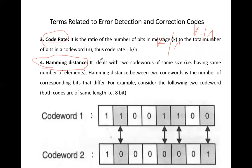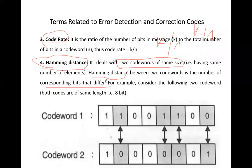The fourth term is Hamming distance. Hamming distance deals with two code words of the same size. Recall that a code word is actual data plus redundant bits. Hamming distance always works on two code words of equal size. The Hamming distance is the total number of differing bits between two code words.